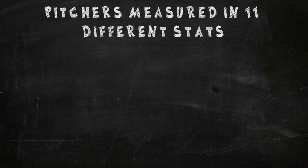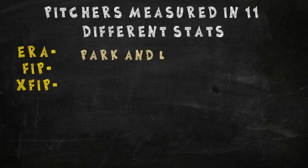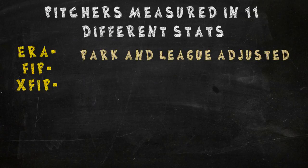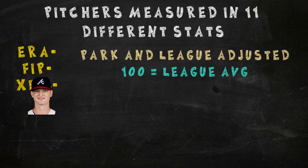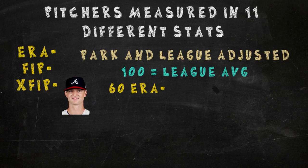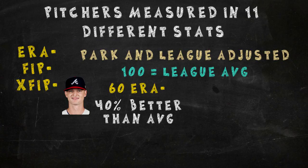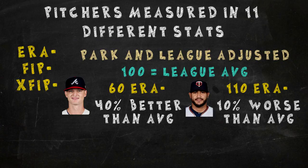The first three are our run prevention metrics: ERA-, FIP-, and xFIP-. These are just park and league-adjusted versions of earned run average, fielding independent pitching, and expected fielding independent pitching. They are centered around 100 being league average, and since allowing fewer runs is a good thing, lower scores are better. For example, Mike Soroka had an ERA- of 60 in 2019, meaning his park-adjusted ERA was 40% better than the NL average, and Martin Perez had an ERA- of 110, meaning he was 10% worse than league average in the American League. For our purposes, we're looking for pitchers to be as close to 100 as possible.